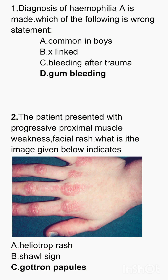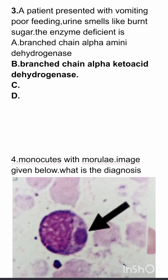Second question: A patient presented with progressive proximal muscle weakness and facial rash. What does the image given below indicate? The given image is of Gottron papules.